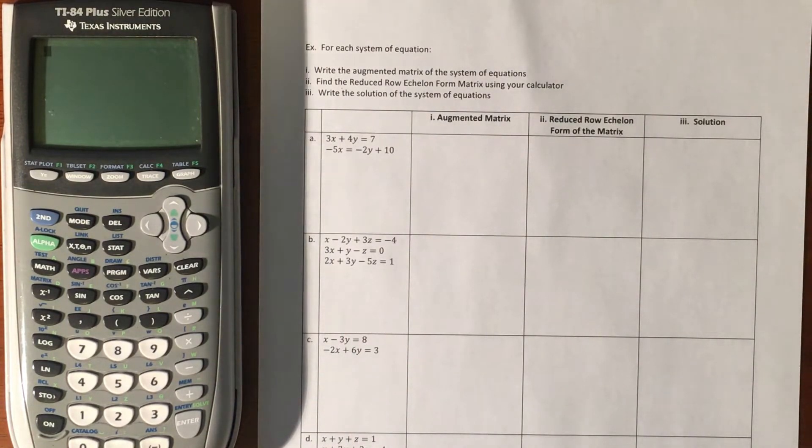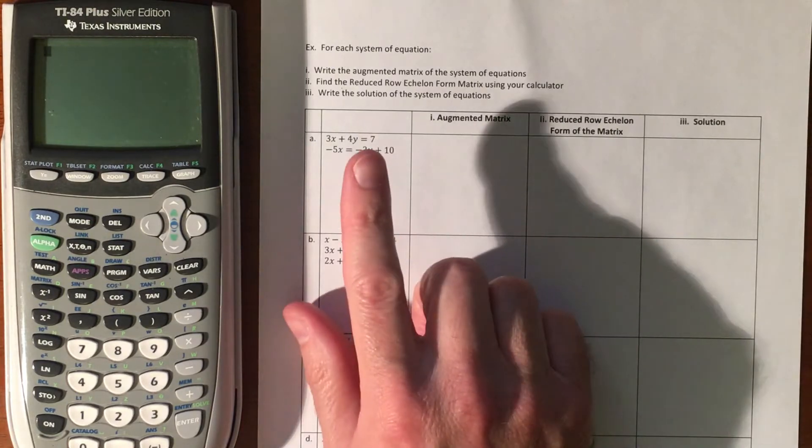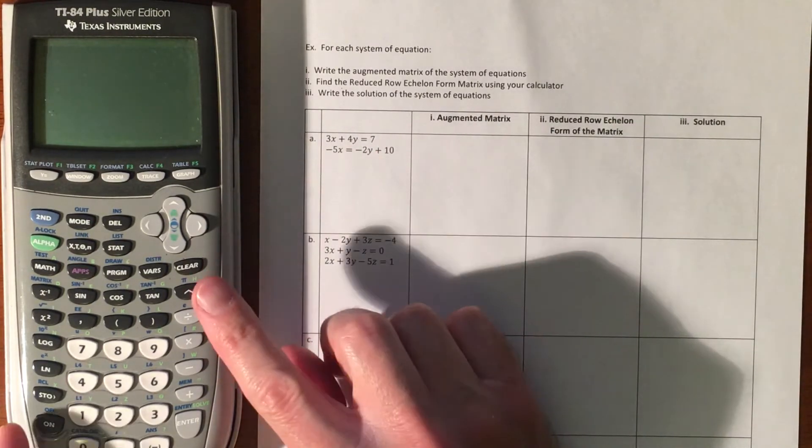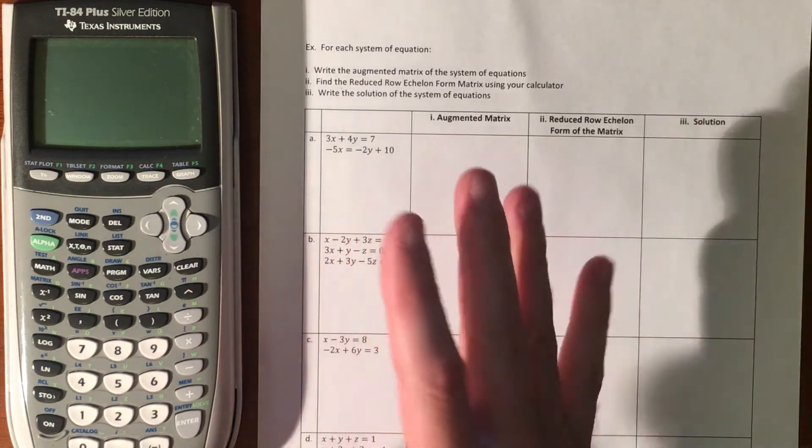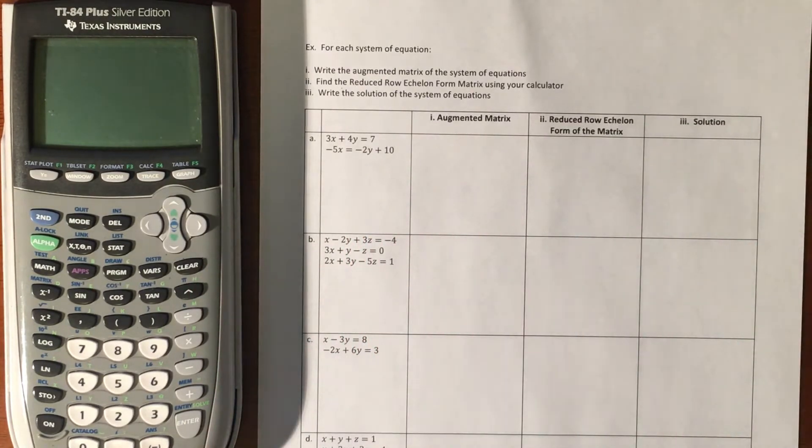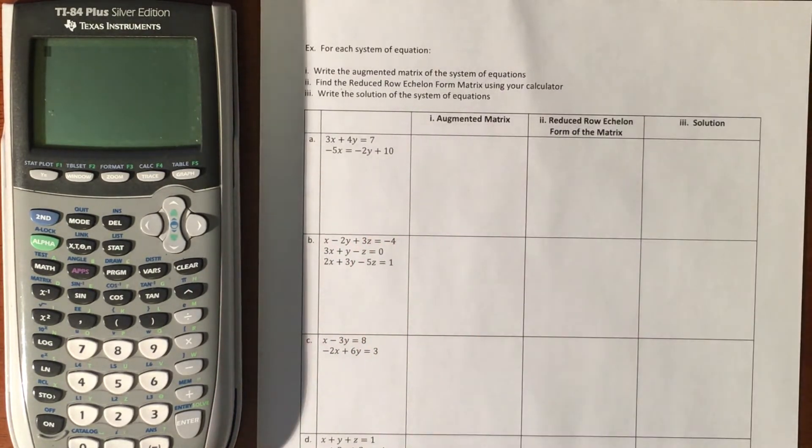We're going to give an example with two equations and two variables to show how to put it into the calculator and get your solutions out. With two variables and two equations, you could use elimination, substitution, you could graph it to see where the lines cross, or you can use matrices.